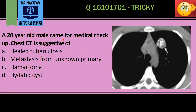We have a 20-year-old male who has come for a medical checkup and a chest CT was done. Why is this a CT? Because the bones are white. Now, is this a non-contrast or contrast CT? It's a non-contrast CT because the vessels — this is the aortic arch — they are not white.